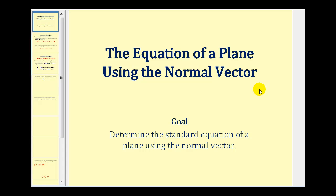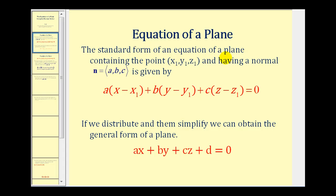Welcome to the equation of a plane using the normal vector. The standard form of an equation of a plane containing the point (x₁, y₁, z₁) and having the normal vector with components a, b, and c is given by: a(x − x₁) + b(y − y₁) + c(z − z₁) = 0. The point on the plane gives us the constants of the binomial factors, and the components of the normal vector a, b, c give us the constant factors.